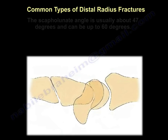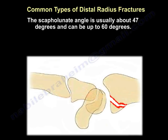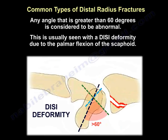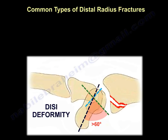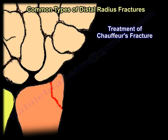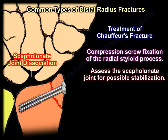The scapholunate angle is normally approximately 47 degrees and can be up to 60 degrees. Any scapholunate angle greater than 60 degrees is considered abnormal, and is seen in DISI deformity due to palmar flexion of the scaphoid, indicating scapholunate dissociation. The lunate tilts one way while the scaphoid goes the other — they no longer work together. Treatment of Chauffeur fracture is usually compression lag screw fixation of the radial styloid, followed by assessment of the scapholunate joint for possible stabilization.